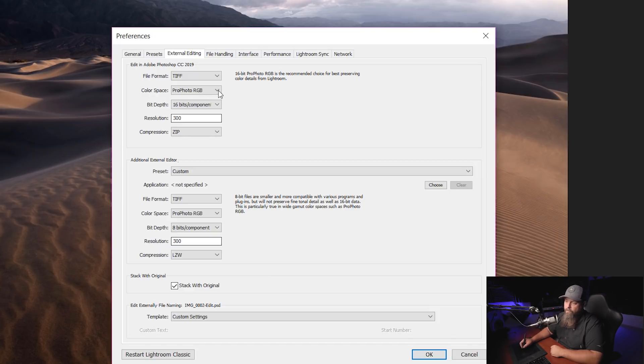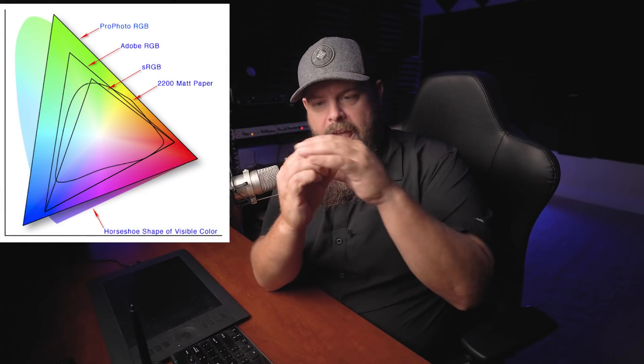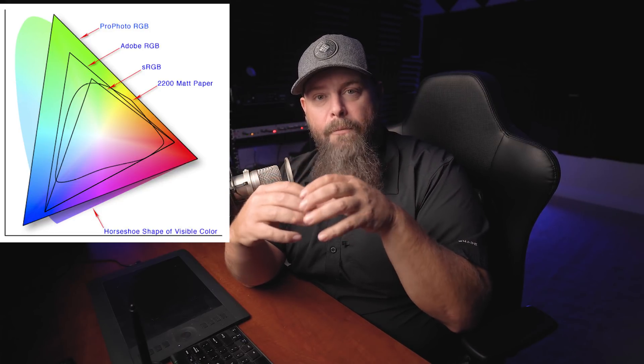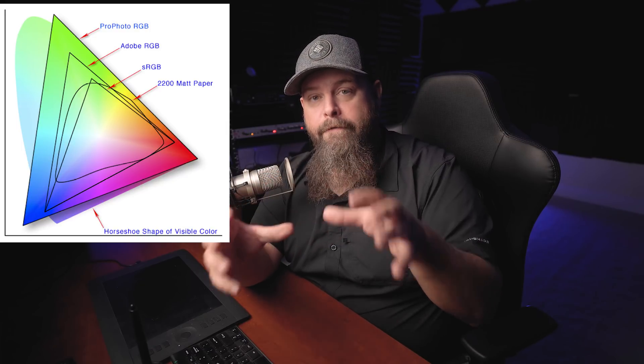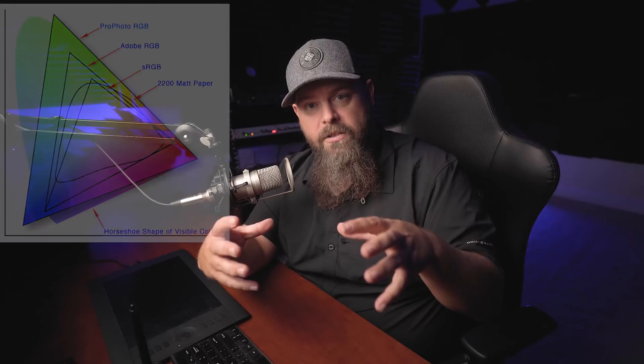The next setting is probably our most important: color space. A lot of times by default it'll have Adobe RGB or sRGB selected. Essentially, color space is the size of the space we're working in. sRGB is a smaller color space, meaning fewer gradations between colors. Adobe RGB is quite a bit larger, and ProPhoto RGB is the largest color space available to us. The larger the color space we're editing in, the more gradations our photos can have when we go to print. If you plan on printing, always work inside ProPhoto.